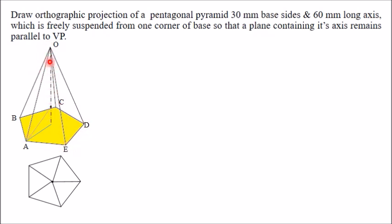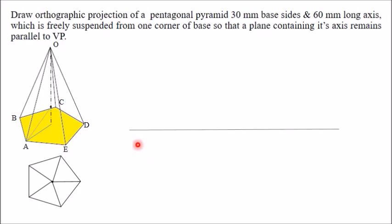All other faces of the pyramid are isosceles triangles. When a body is freely suspended, the line joining the suspension point A to the center of gravity of the pyramid should be vertical. In all these types of problems, first we keep this pyramid on HP, meaning its base is kept on HP. Therefore, the first step is to draw the top view. Draw XY line and draw the top view, which will be a pentagon in shape.